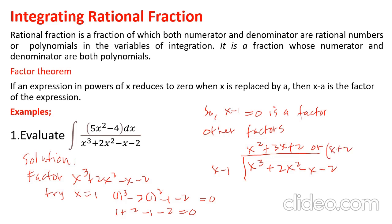Factoring x² + 3x + 2 gives (x + 2)(x + 1). So the full factorization includes x minus 1, x plus 2, and x plus 1 as factors.